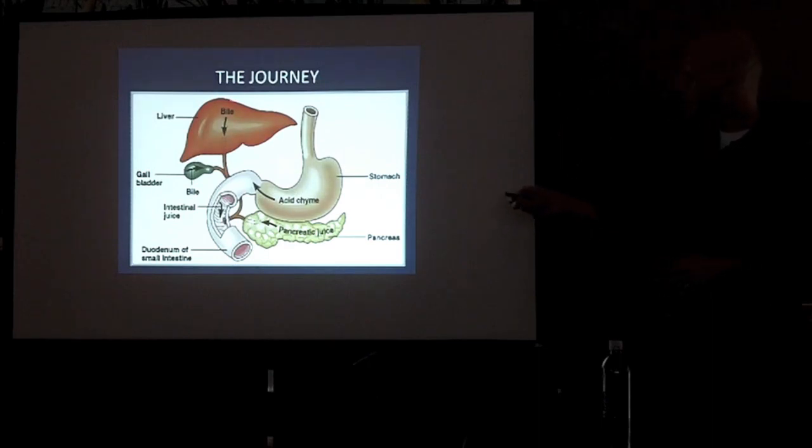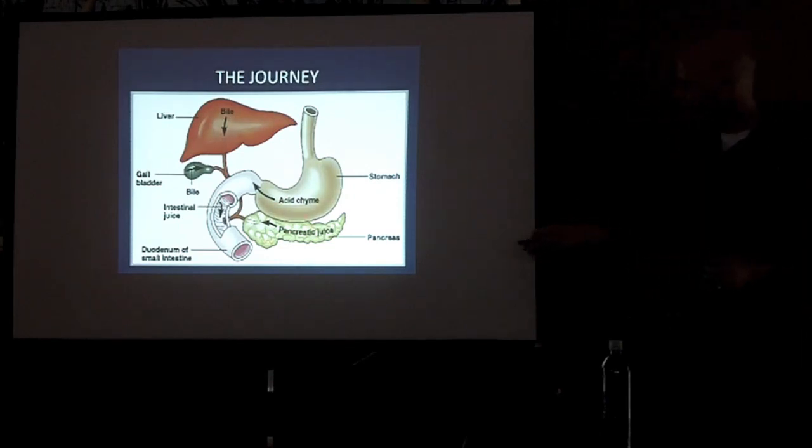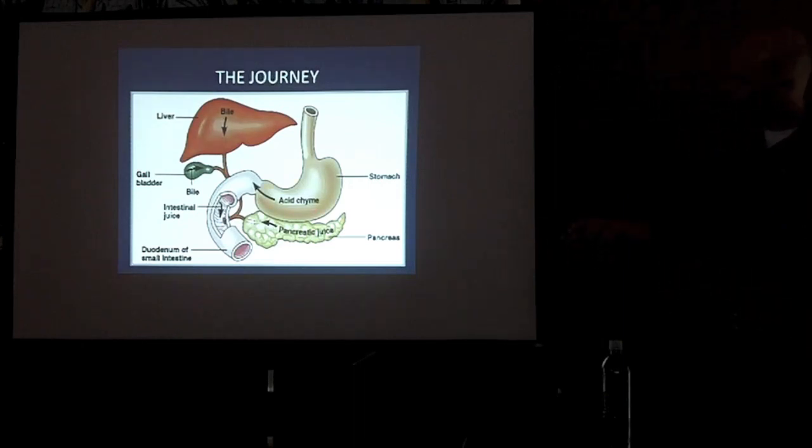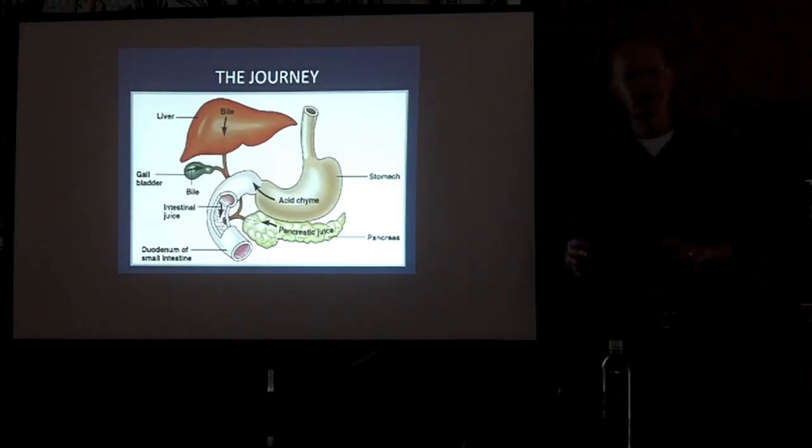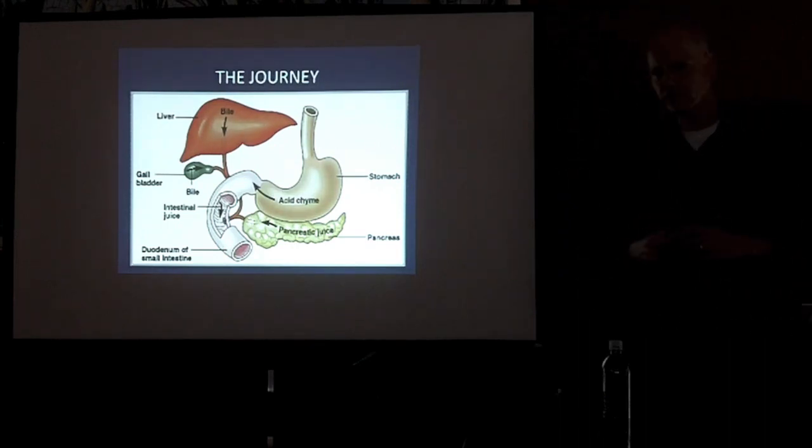The liver at that point is going to start secreting bile. The gallbladder is going to start secreting bile. And your pancreas is going to start secreting different pancreatic juices and enzymes. What's really interesting is that highly acid mixture of your food, as it comes down that about a foot long tube, is going to become alkaline on the other end. It's moving into your small intestine where 90% of the absorption is going to occur.